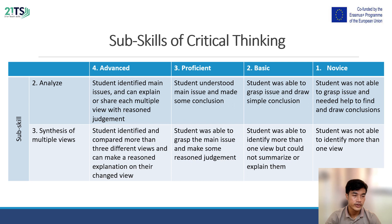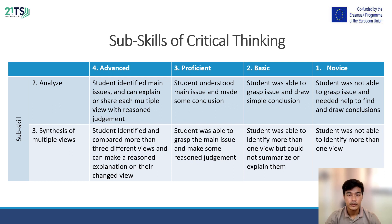Sub-skill three: Synthesis of Multiple Views. At the advanced level, students identify and compare more than three different views and can make a reasoned explanation on their changed view. At the proficiency level, students are able to grasp the main issue and make some reasoned judgment. At the basic level, students are able to identify more than one view but could not summarize or explain them. At the novice level, students are not able to identify more than one view.